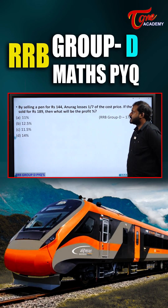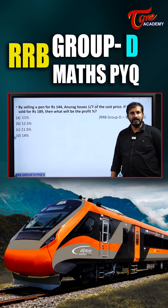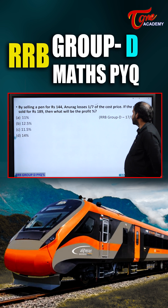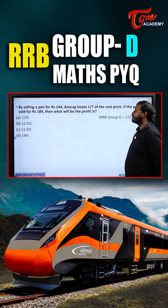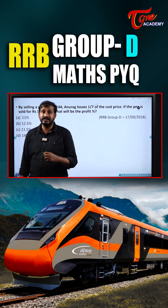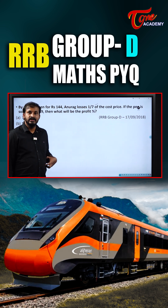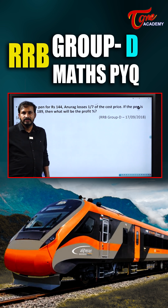By selling a pen for ₹144, one incurs a loss of 1/7th of the cost price. If the pen is sold for ₹189, what will be the profit? If he sells it for ₹144, he is losing 1/7th of the cost price.